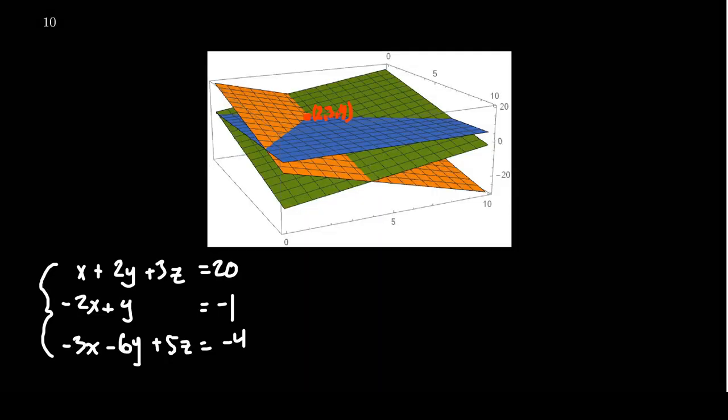In the previous video, we saw that a linear system can only have three types of solution sets. Either it's inconsistent and has no solution, it could have a unique solution making it consistent — we call this the independent case — or it could have infinitely many solutions, which would make it consistent, and we refer to that as the dependent case. These three possibilities are the only possibilities for systems of linear equations of any dimension. In this video, I want to talk about how you might visualize and think about these three possibilities in three dimensions, because the same three possibilities are the only ones available there as well.